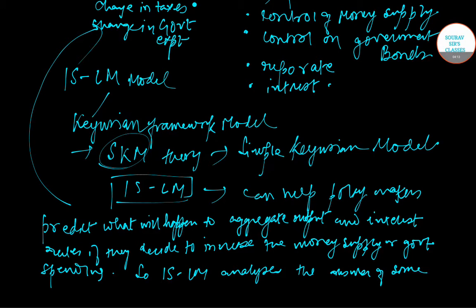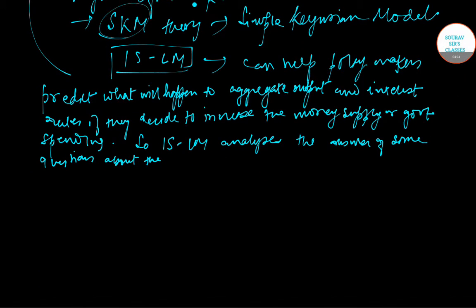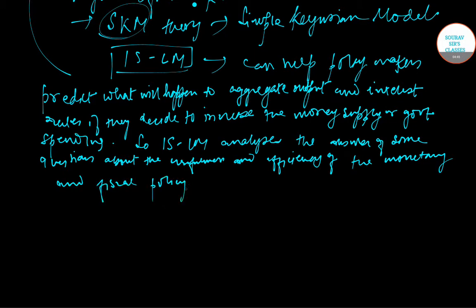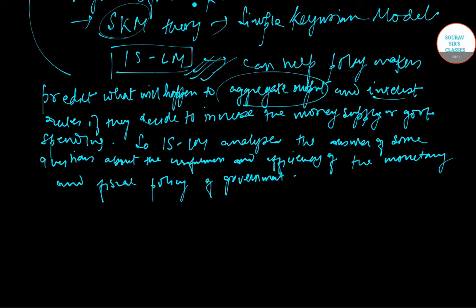The IS-LM model analyzes the usefulness and efficiency of the monetary and fiscal policies undertaken by the government. Basically, the IS-LM model helps us — or rather helps the government — to determine what the aggregate output should be and what the equilibrium interest rate in the economy should be, so that there is equilibrium prevailing in the market.